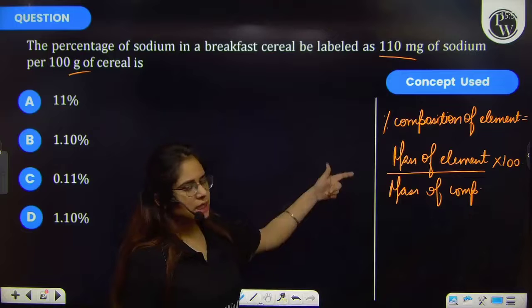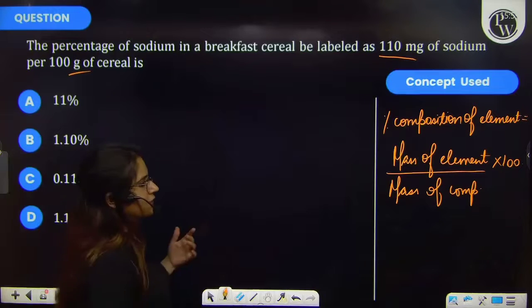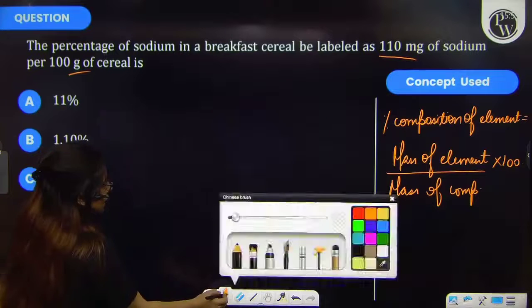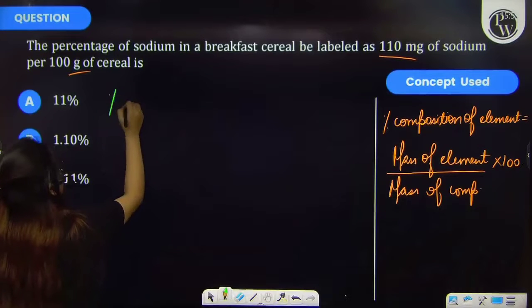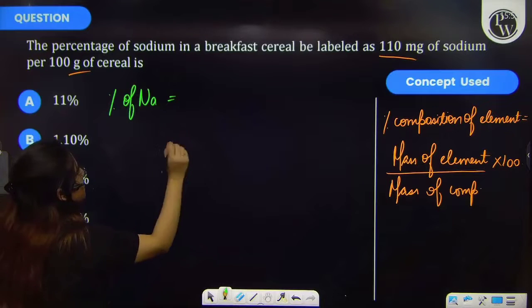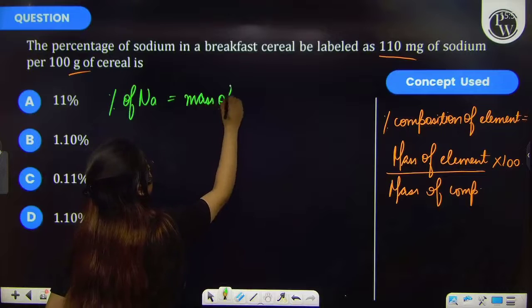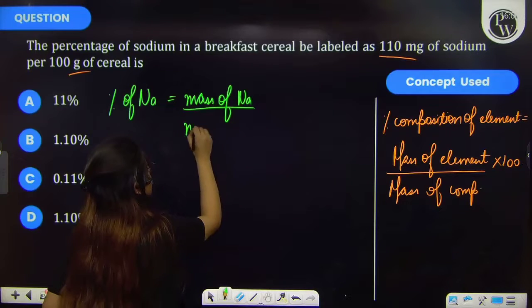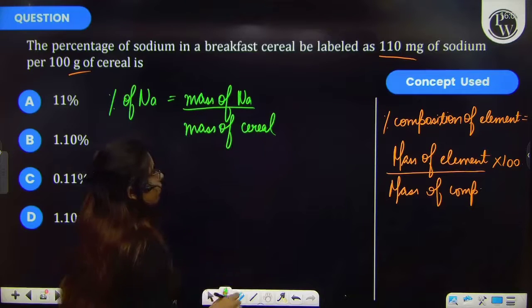Now, by using this formula, let's find the answer of our question. In question, we have asked for the percentage of sodium. So, percentage of sodium will be equal to mass of sodium in this compound and then mass of sodium.